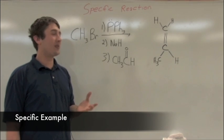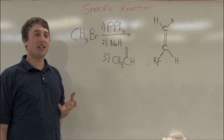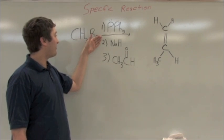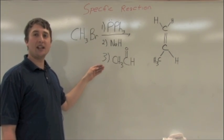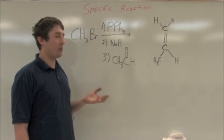Now for a specific example of the Wittig reaction: Take methyl bromide and in three separate steps react it with triphenylphosphine, sodium hydride, and acetaldehyde to give you the alkene, in this case propylene.